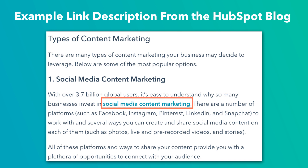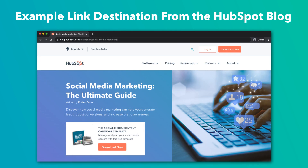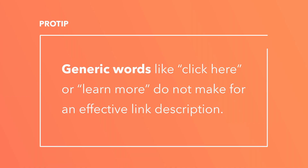Look at the blue hyperlink. This link description reads: social media content marketing. When you click on the link, you're taken to the link destination, which is the ultimate guide to social media marketing. The link description perfectly describes the content of the destination page. So what does a bad link look like? Generic words like click here or learn more are not an effective link description. Google suggests these link description best practices.